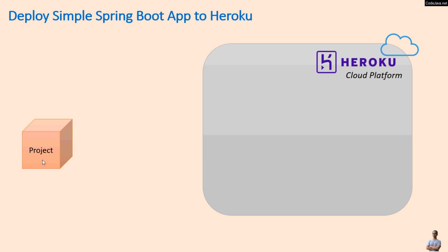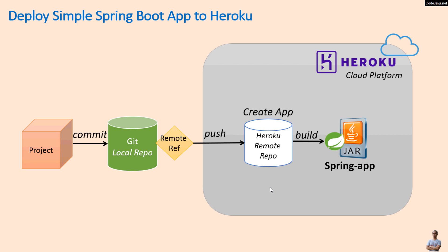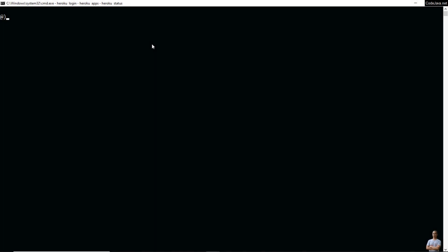Here are the main steps for deploying a simple Spring Boot app to Heroku. Firstly, we need to commit the project to the Git local repo, then create a new app on Heroku. This app is associated with a Heroku remote repo, and we need to change the remote reference of the local repo to that remote repo. To deploy, we just push the code from the local repo to the remote repo, and then Heroku will build the application and deploy it as an executable Java file.